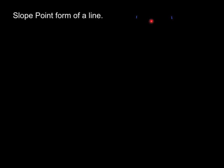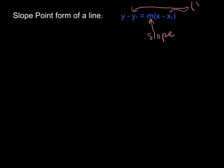If you notice, we've got the slope, and then we have the y-value of the point and the x-value of the point. That's your slope, that's your y-value right here, and this is your x-value of the point — of one point on the line — which we'll just call x1, y1.